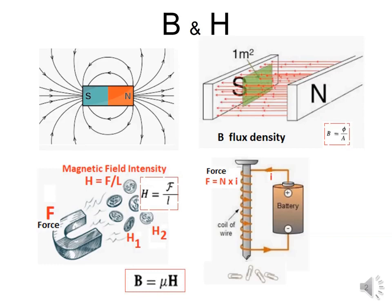The flux density as well as the field intensity are related to the magnet, and they have an interlinked relation: the magnetic flux density B is equal to mu times H. Here mu is the permeability of the medium or material, and H is the field intensity.